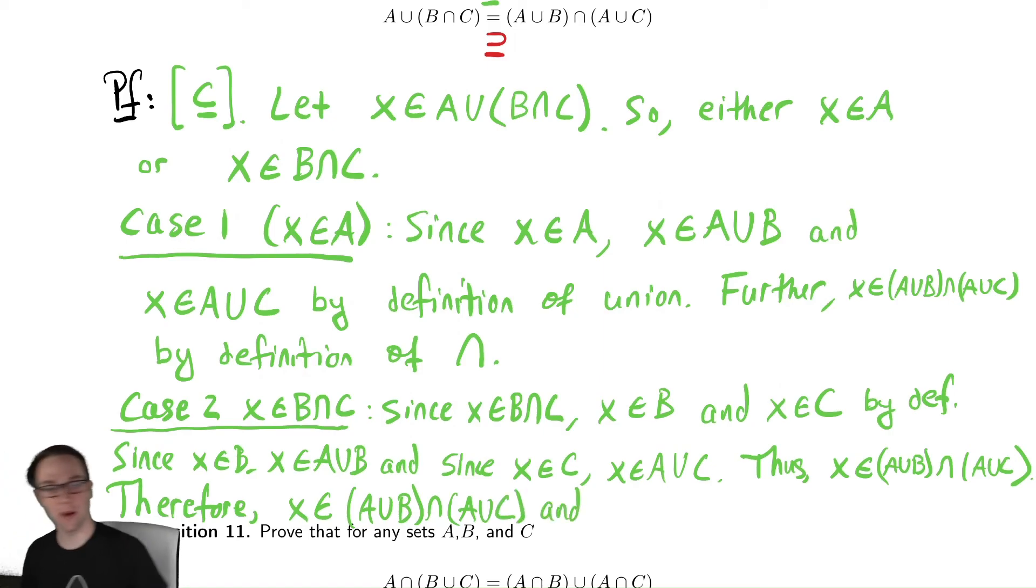And, because of that, we now know that the left-hand side is a subset of the right-hand side. We now know that A union B intersect C is a subset of A union B intersect A union C. So, that's how you do the left-hand side as a subset of the right-hand side.